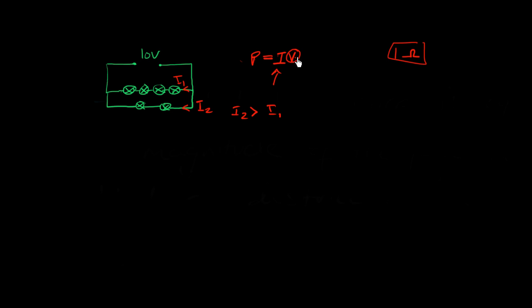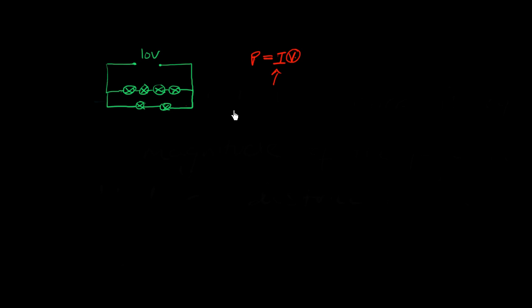So we've established two things: the potential difference across the two-bulb branch is 5 volts compared with 2.5 volts in the four-bulb branch, and the current is also bigger in the two-bulb branch. Now let's prove it with calculations. First, what's the total resistance of the circuit? We need that to find the total current before it splits.